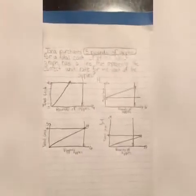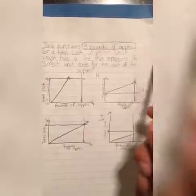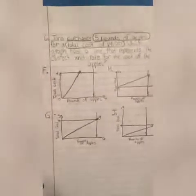So first, I circled the first clue: she purchases five pounds of apples. The second clue I circled was a total cost of four dollars.